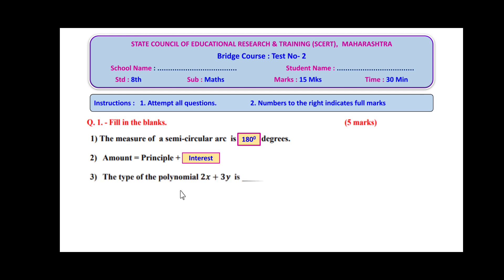Sub-question three: the type of the polynomial 2x plus 3y is ___. Here there are two terms — 2x and 3y. Therefore, the type of the polynomial 2x plus 3y is a binomial.